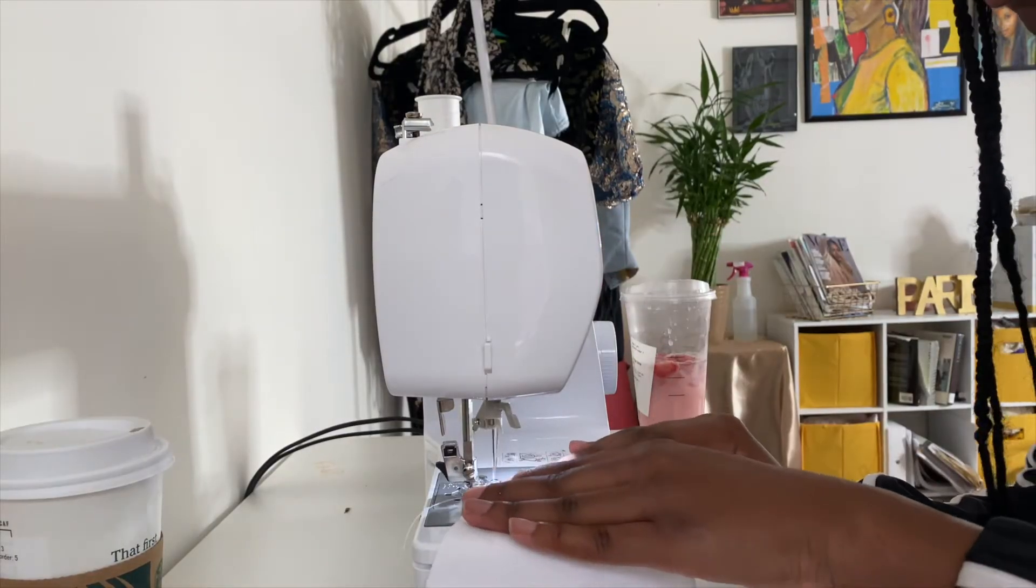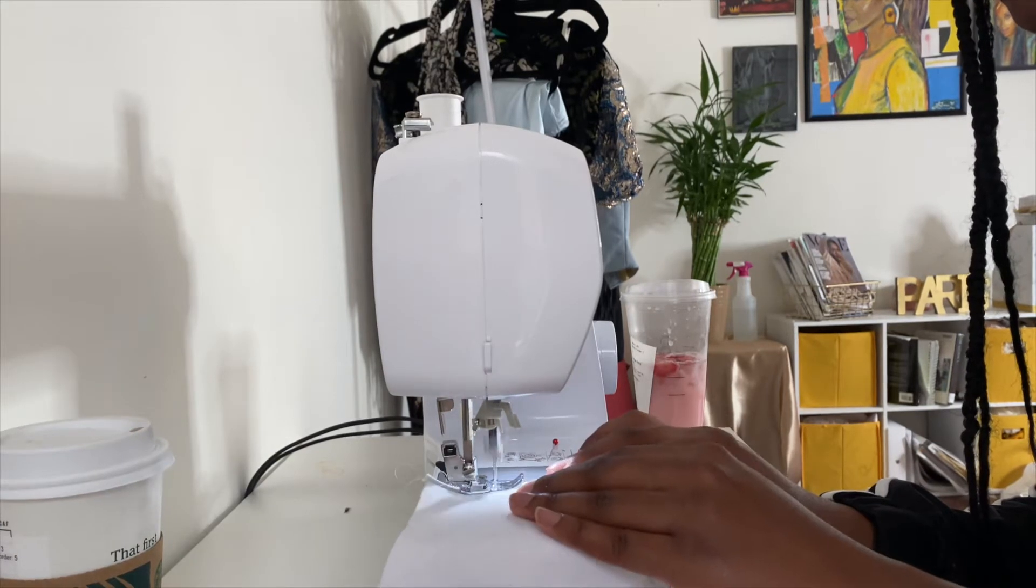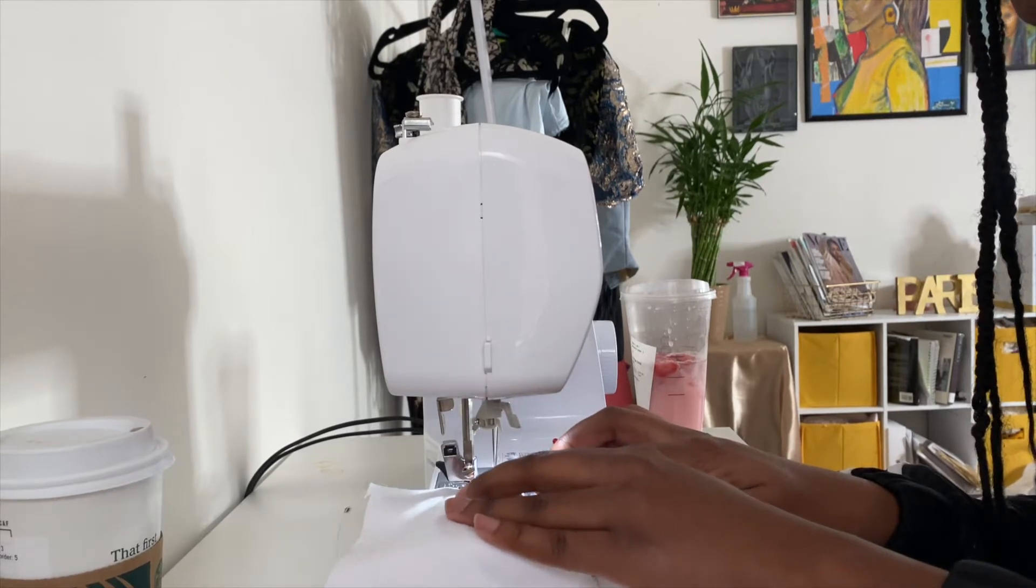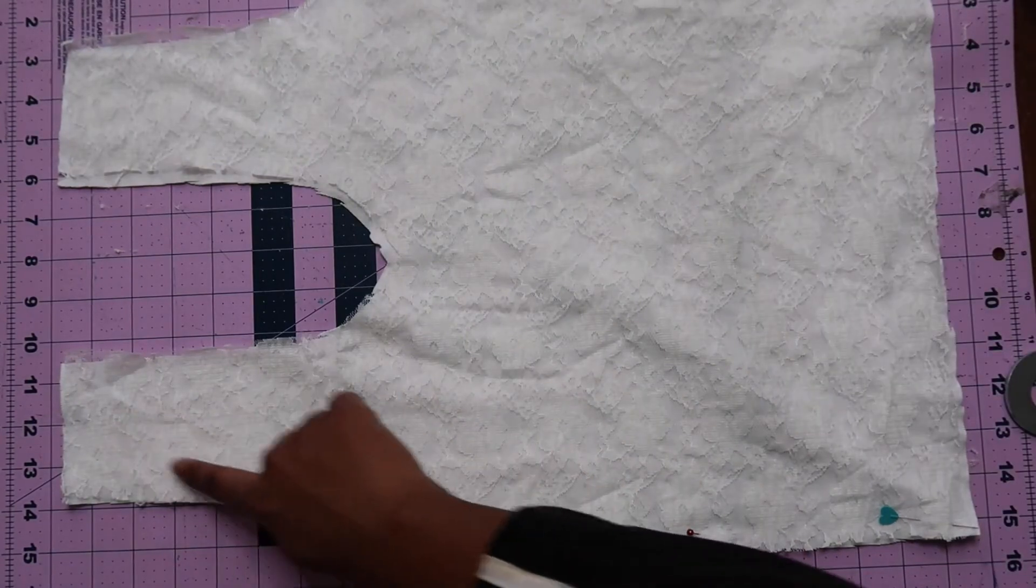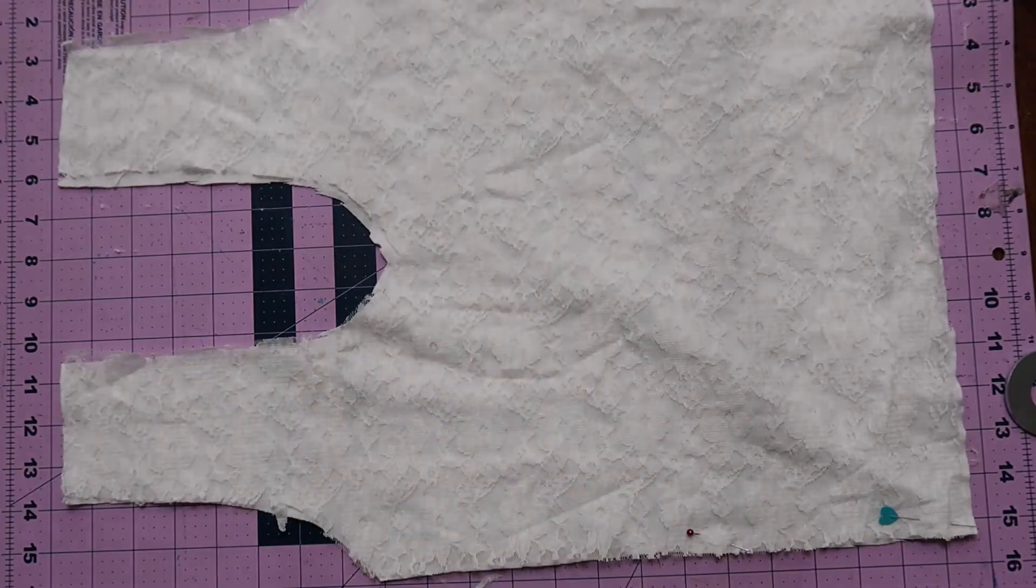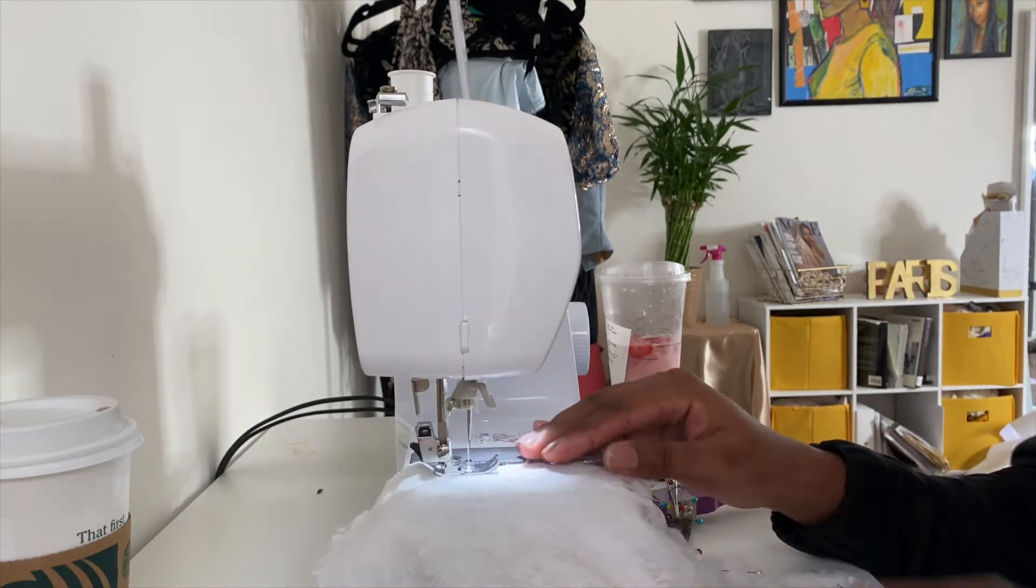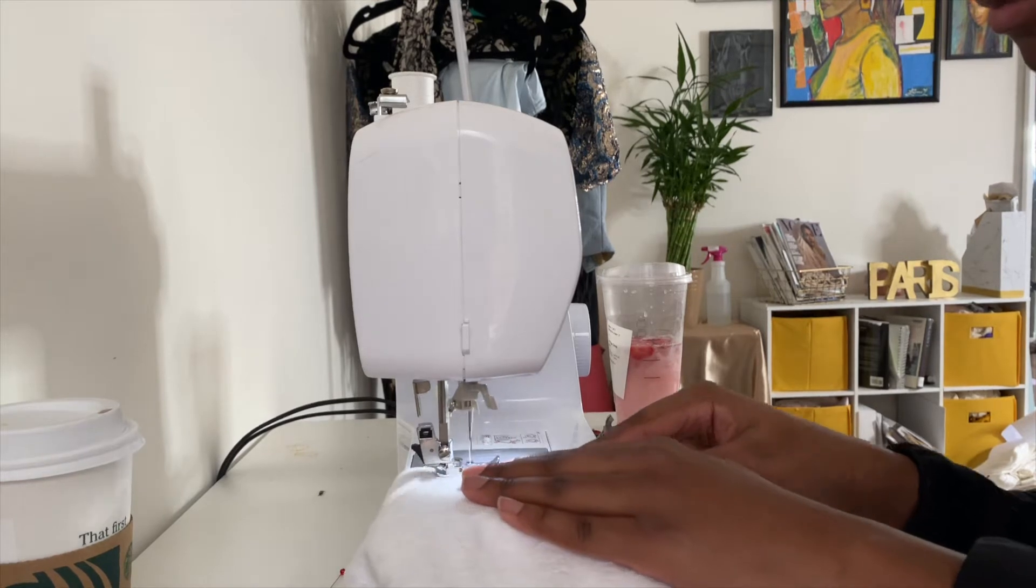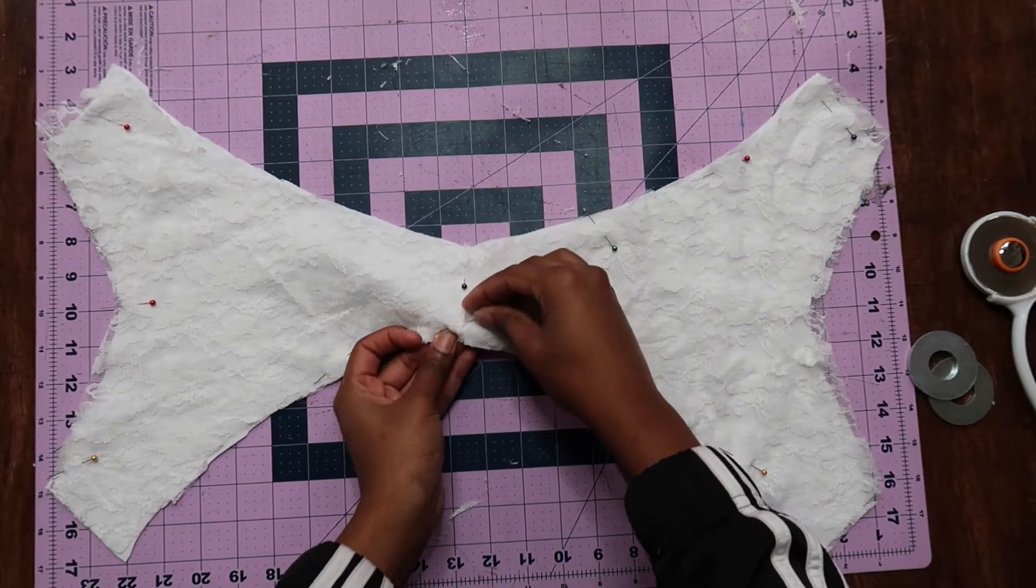I'm going to first attach the lace to the knit with a zigzag stitch all around the edges. It's like gluing it on there, but we're sewing it, so we're trying to make them into one piece. I'm also going to do the same thing with the panty pattern.